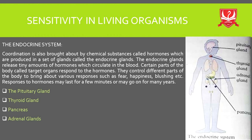I have told you before that the nervous system and the endocrine system are coordinated. This coordination is through the pituitary gland. The nervous system and endocrine system are connected because of this gland — it is responsible for their interconnection. We receive a message and we respond.